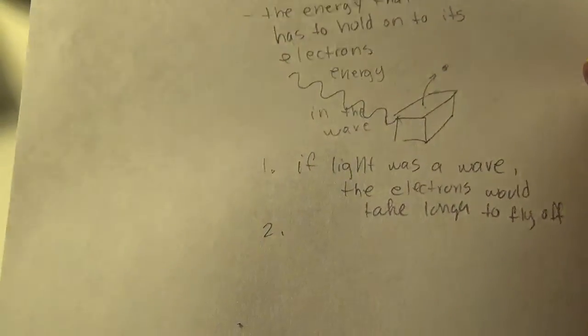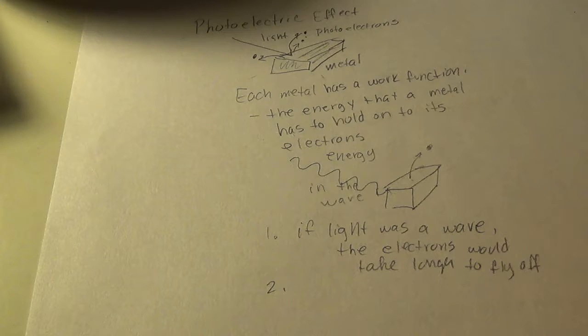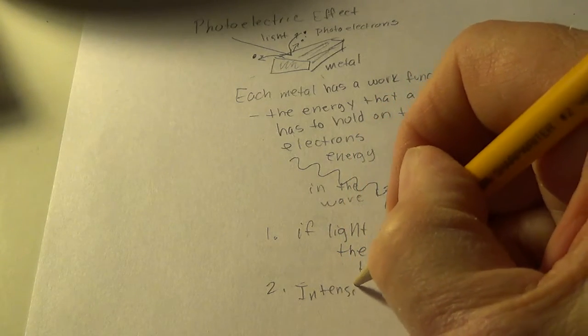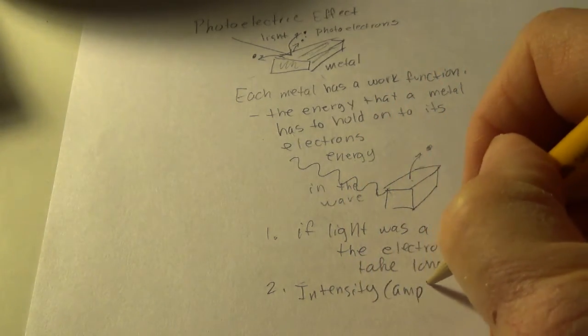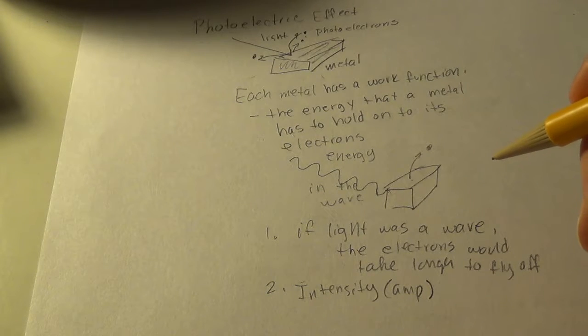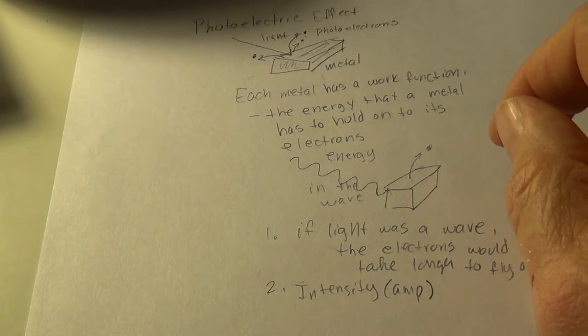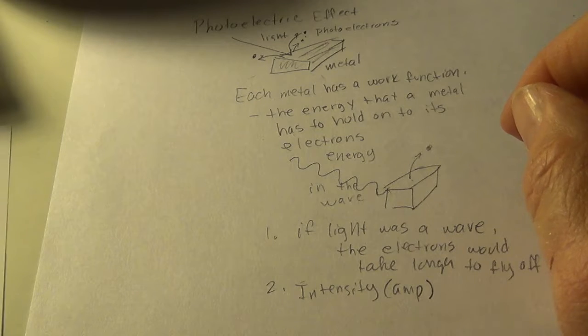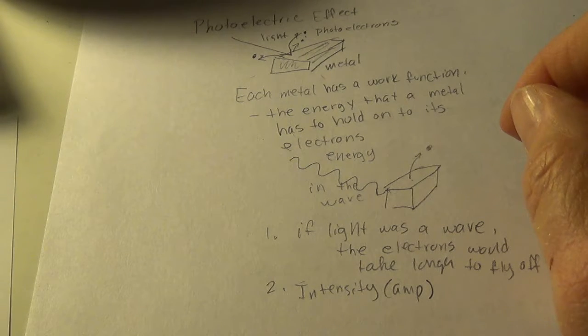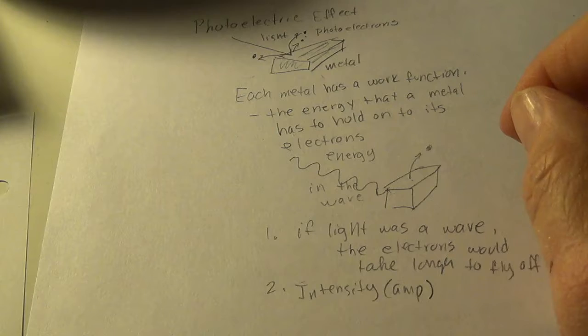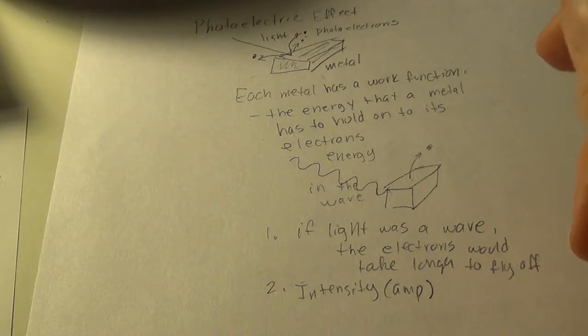So, make a note of that somewhere around the number one oddity. Number two oddity, it says that intensity, and when I say intensity, I'm talking about the amplitude. So, intensity is the amplitude of the wavelength had no difference on the energy level of the electrons that flew off. So, on number two, it said the intensity of light had no effect on the energy of the electrons after they flew off or left the metal.